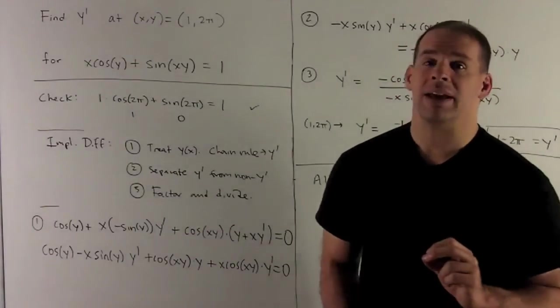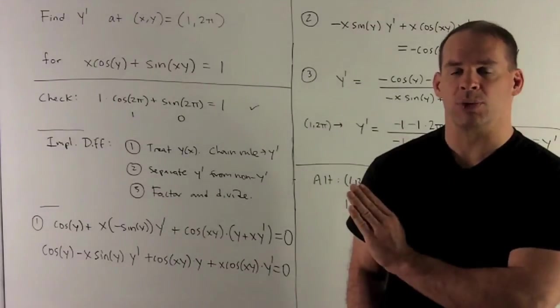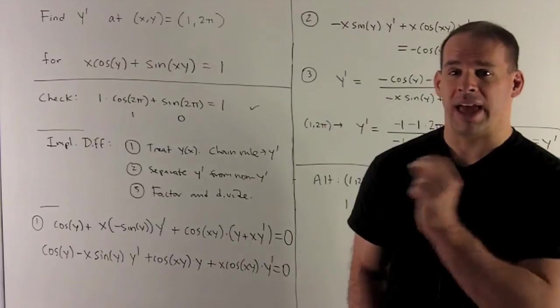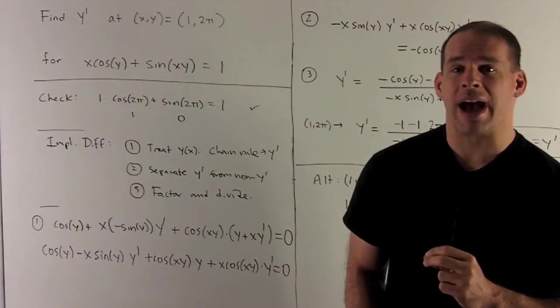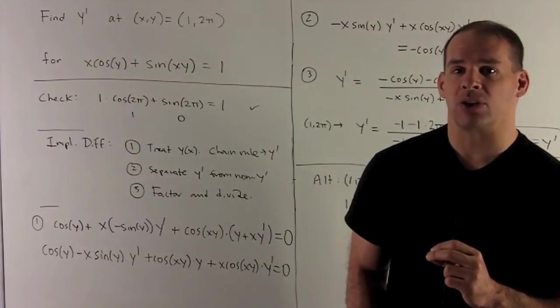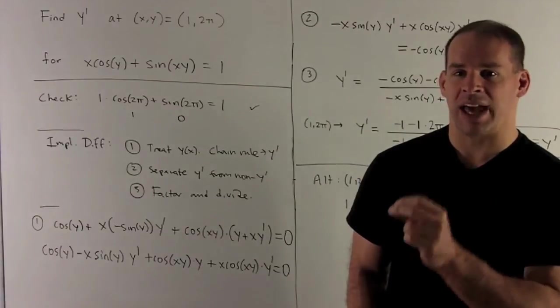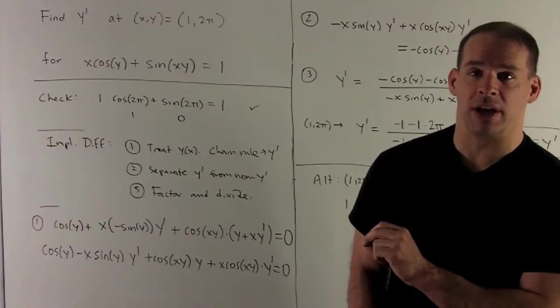Go to my next term. I have sine of x times y. Cover up the x times y. What's the derivative of sine? That's going to be cosine. We put the x, y back in. Multiply by the derivative of x times y. Okay, that's our chain rule. Derivative of x times y, again, is the product rule. So it's going to be 1 times y plus x times y prime. I leave the y prime as it is because that's what we're trying to find.